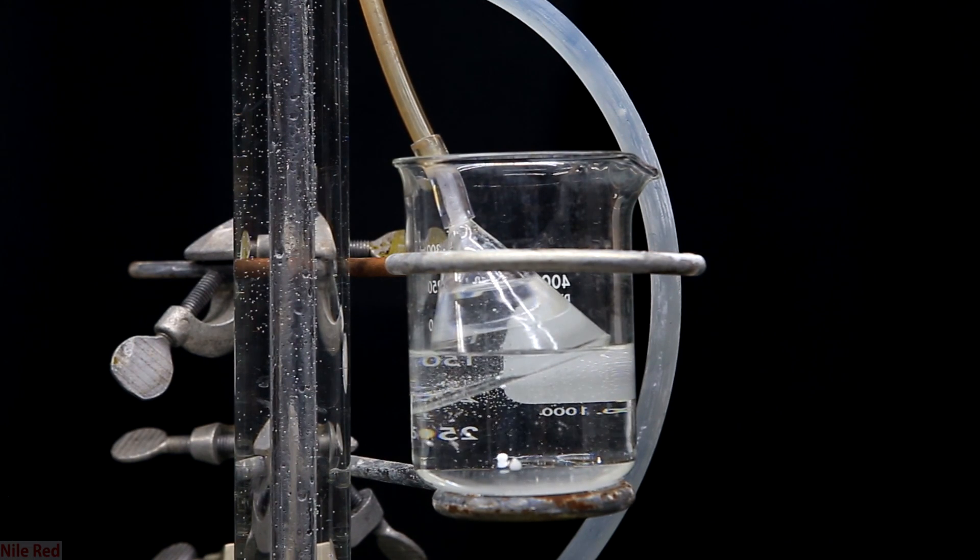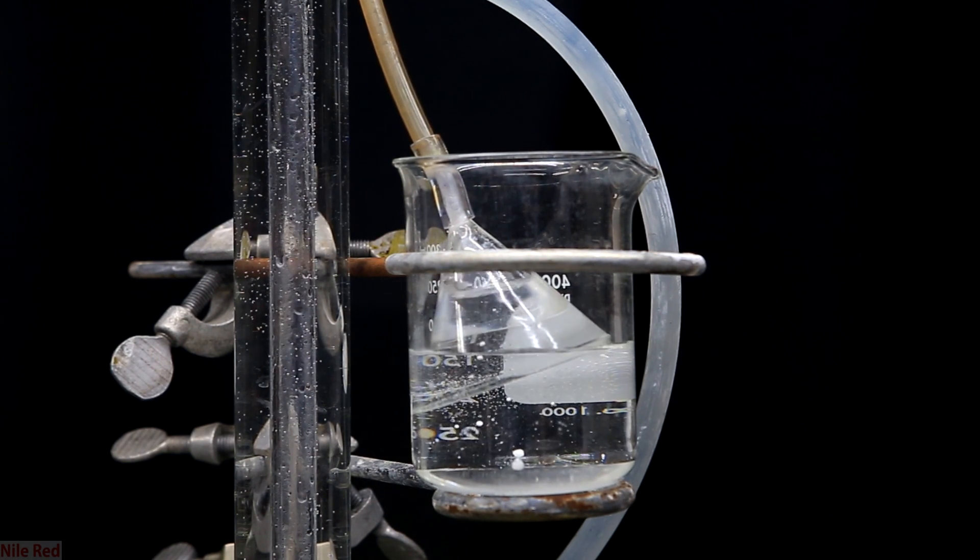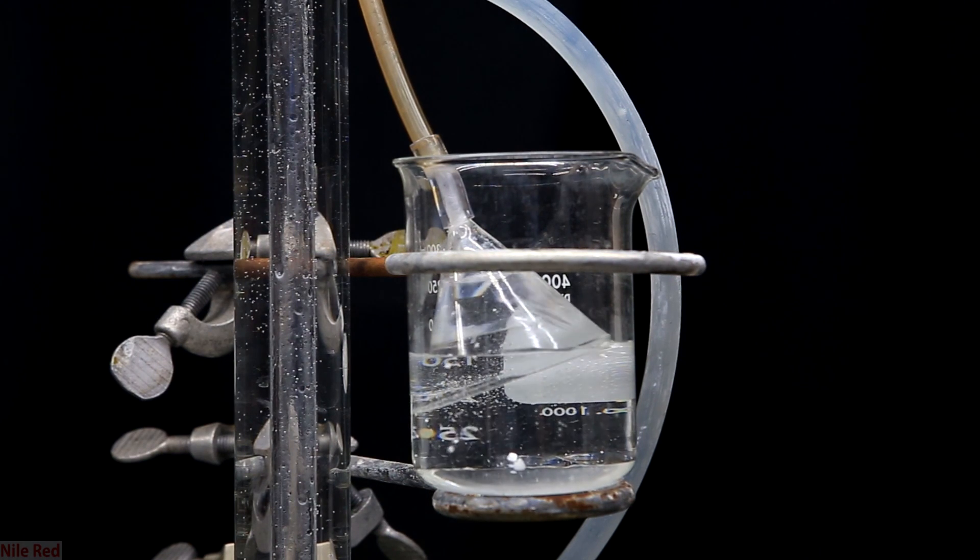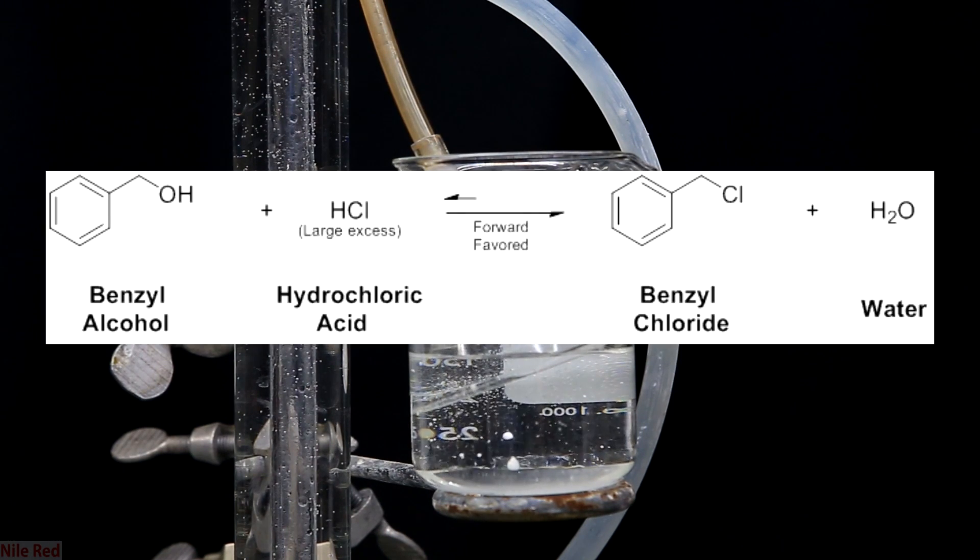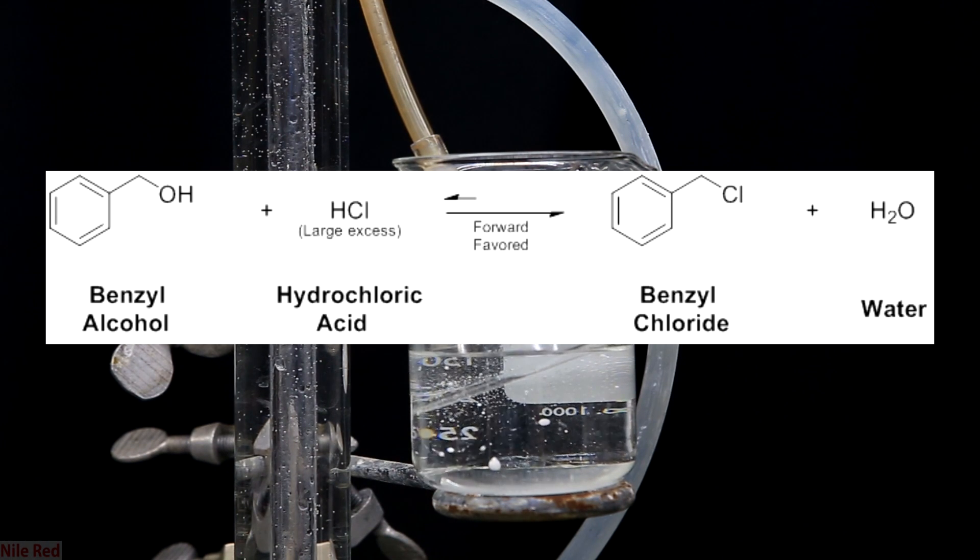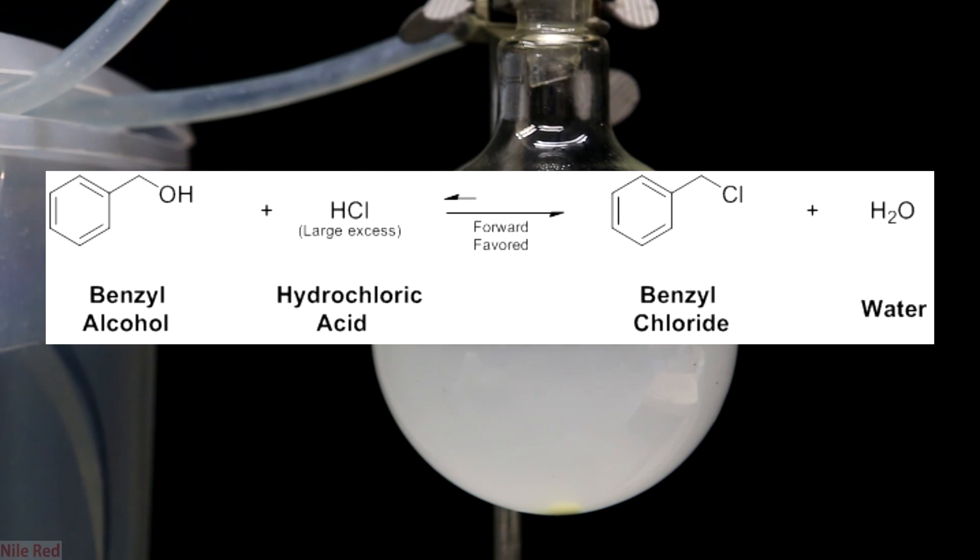There are several ways to make benzyl chloride but the easiest one is to start with benzyl alcohol. We then use hydrochloric acid to do a basic substitution reaction and swap the OH of the alcohol for the Cl in the hydrochloric acid. The benzyl alcohol is soluble but the benzyl chloride isn't so our product separates and then we isolate it. So that's the basic overview and now we can get started.